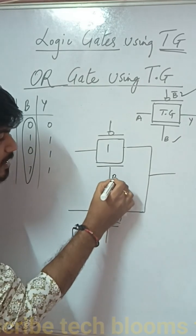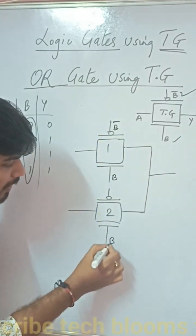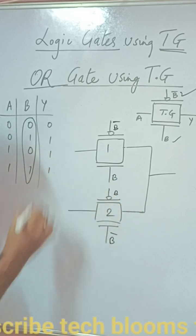Now as you can see here we will be assigning this as B and this will be your B bar and this will be B bar and this will be B as these two have to be connected.